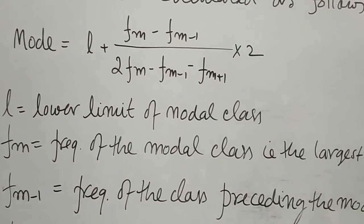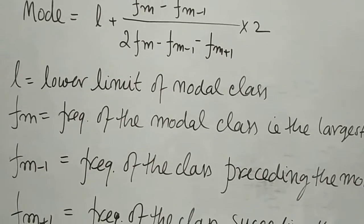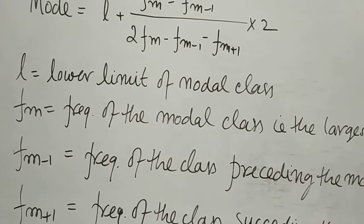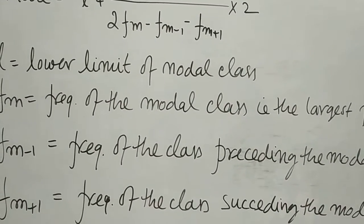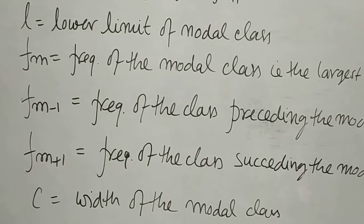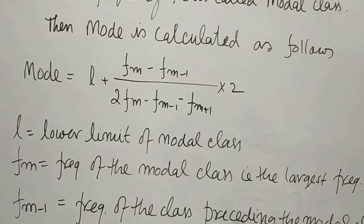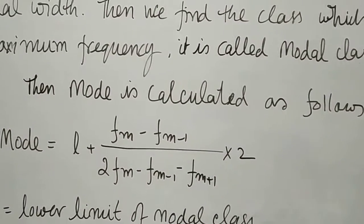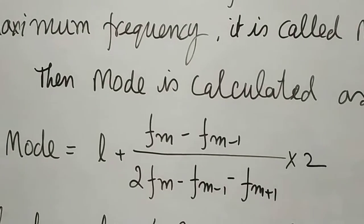You can remember or relate it with the preceding class. And fm+1 you can relate with the succeeding class. C is the width of the modal class. Now you have all the values, put all the values in this formula and you will get the mode.